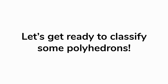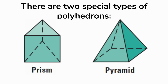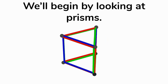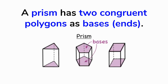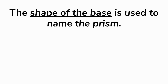Now that you've learned what polyhedron means — it's a 3D shape with many faces — we're going to classify some polyhedrons. There are two special types of polyhedrons we'll really focus on in this video: prisms and pyramids. We will start with prisms first. A prism has two congruent polygons that are used as bases, and bases are like the ends. If you look at this picture, the purple parts are the bases — the end parts. Every prism always has two bases, and those bases are congruent — both identical, both the same. The shape of the base is used to name the prism.